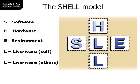The Shell Model, originally put forward by Edwards in 1972 in the proceedings for the British Airline Pilots Association Technical Symposium, originally only had one L, and expresses the interrelationships and interdependences of different systemic components on the one hand and the human component on the other hand, under the influence of environmental conditions.